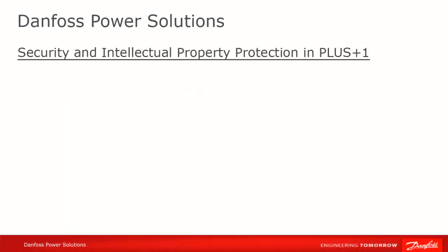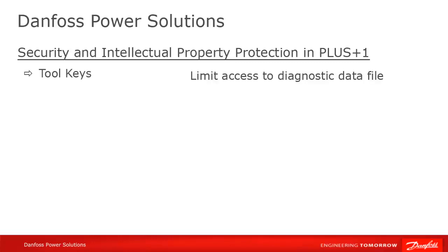The five main methods for limiting access to all or parts of your Plus One system are: toolkeys — the most frequently used and easiest method to control access to the machine. They work by limiting access to an application's diagnostic data file through the service tool. We'll look more into toolkeys in a moment.